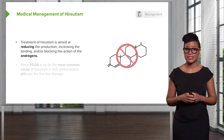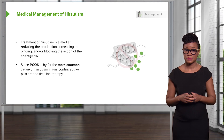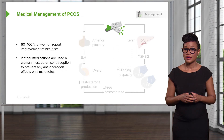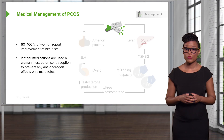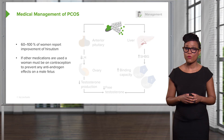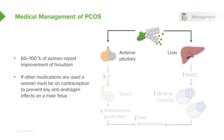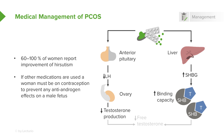Treatment of hirsutism is aimed at reducing the production or increasing the binding and/or blocking the action of androgens. Since PCOS is by far the most common cause of hirsutism, oral contraceptive pills are the first-line therapy. 60 to 100% of women who report hirsutism and then use OCPs have subsequent improvement. If other medications are used, a woman must be on contraception to prevent any antiandrogen effects in a male fetus. Oral contraceptive pills decrease LH secretion from the anterior pituitary, which results in less LH stimulation of the theca cells in the ovary, ultimately leading to decreased testosterone production.